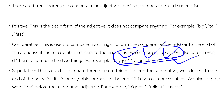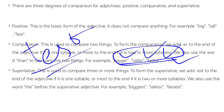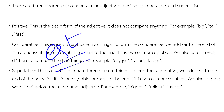For the Superlative, we compare three or more things. We add -est: sweet, sweeter, sweetest; big, biggest; tall, tallest; fast, fastest. Or we use 'most': more interesting, most interesting. This is also called Degrees of Comparison — three degrees: Positive Degree, Comparative Degree, and Superlative Degree. Examples: bold, bolder, boldest; clever, cleverer, cleverest; kind, kinder, kindest; brave, braver, bravest.